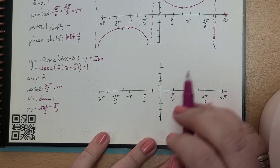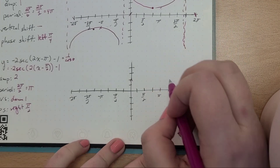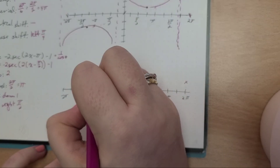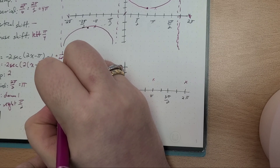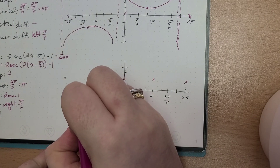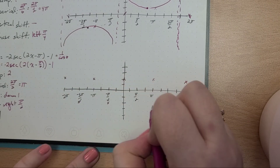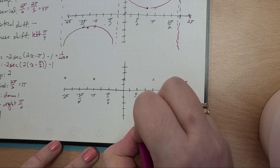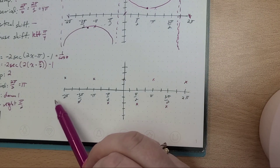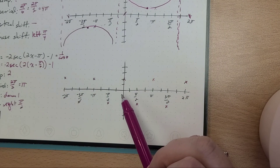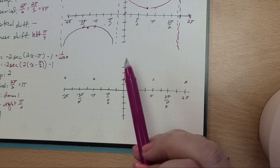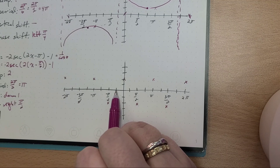Secant we can think of as 1 over cosine θ. So if it's 1 over cosine θ, our amplitude — we would start at (0, 2). And then since our period is π, we would have a point here at π, a point here at 2π, a point here at negative π, a point here at negative 2π. And then in between, I would go down 2 each time. That's where cosine of θ is equal to 0, at those in-between points, but we're shifting π/2.